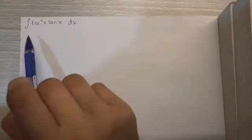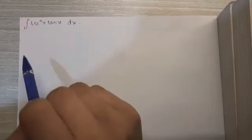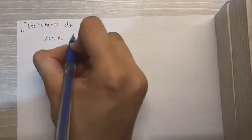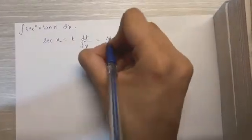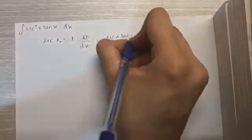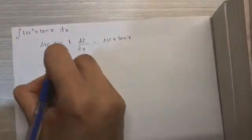Okay, so we know that the differentiation of sec x is sec x tan x. So if I keep sec x as t, then dt by dx becomes sec x tan x. And dx we can write it as dt upon sec x tan x.